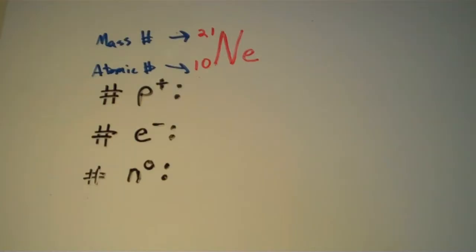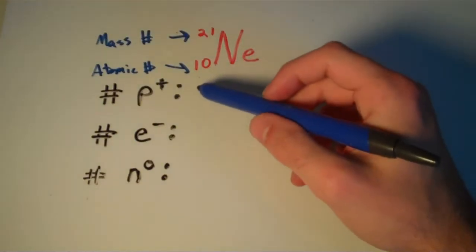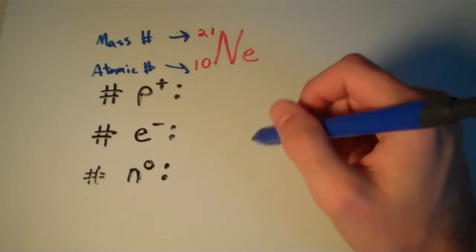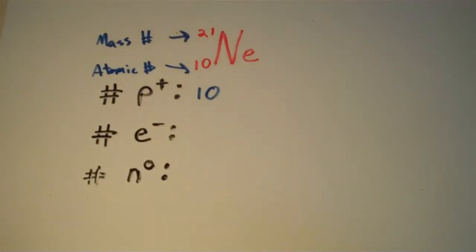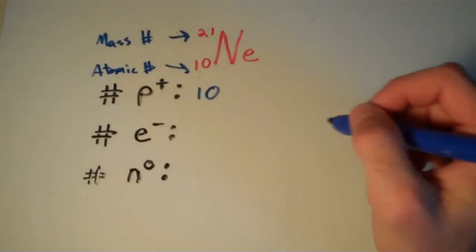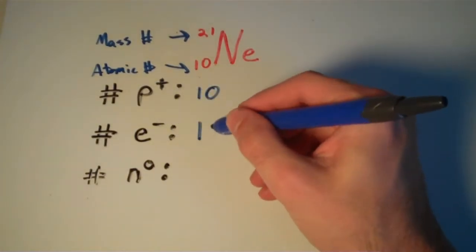So, the number of protons is pretty easy. The number of protons in a nucleus is just going to be your atomic number. So, that means this has 10 protons. And since this atom is neutral, meaning it is not charged, it is electrically neutral, that means that it must have the same number of electrons as it does protons. So, 10 electrons.